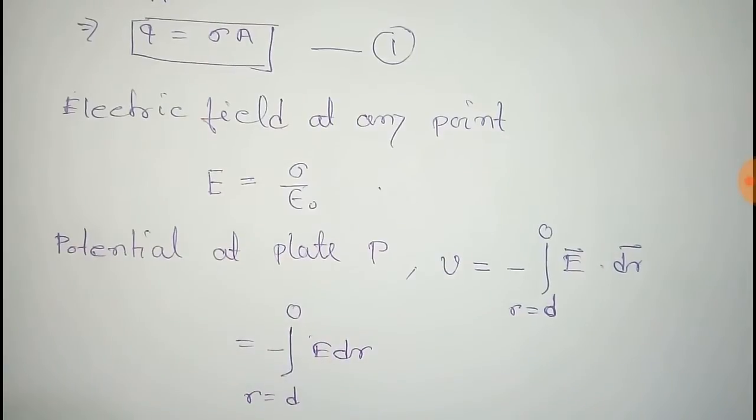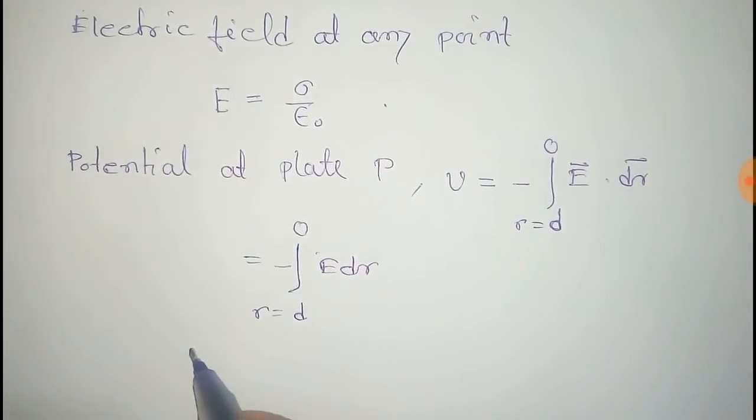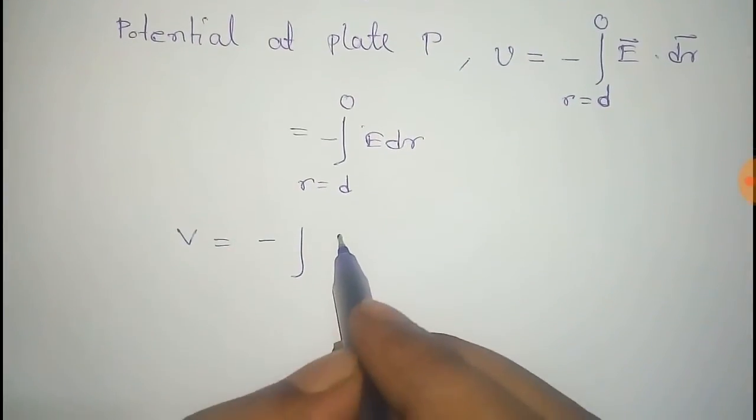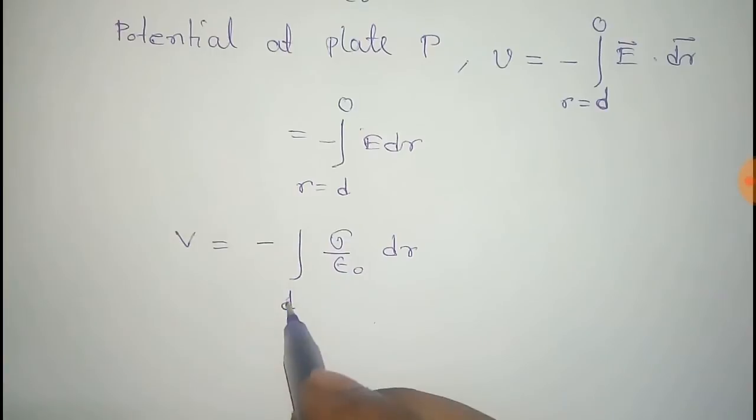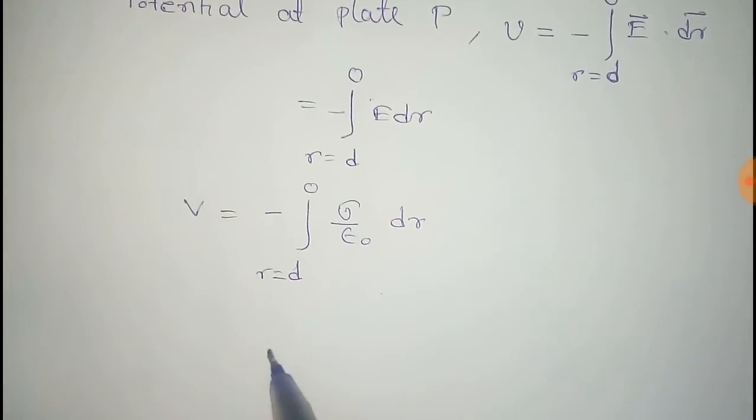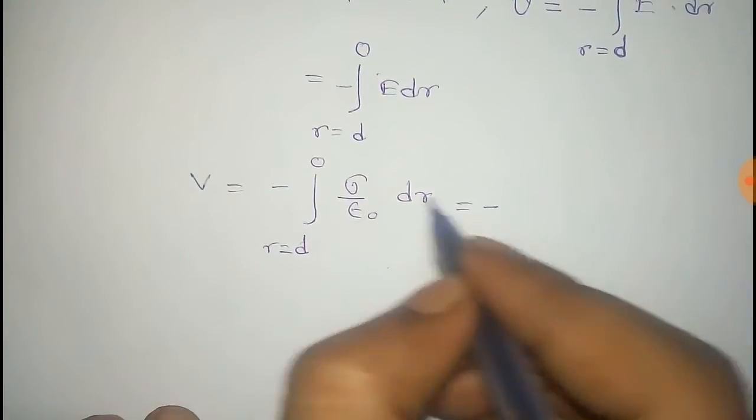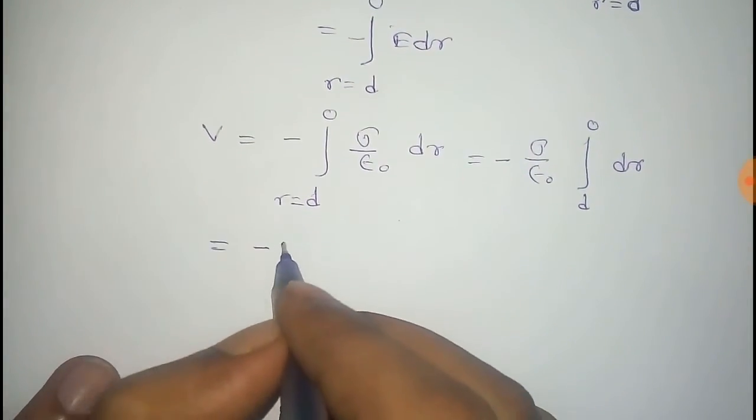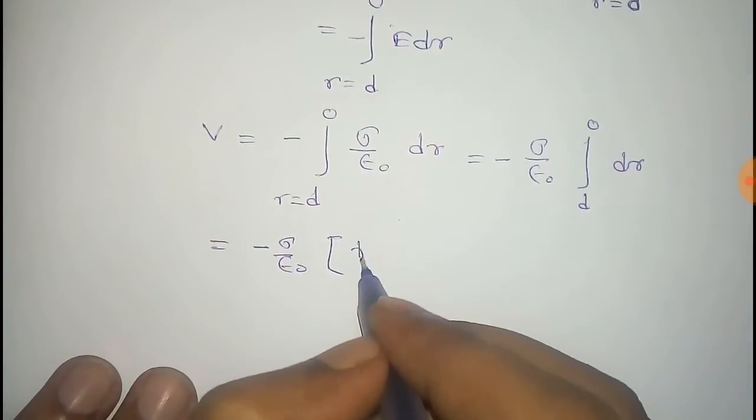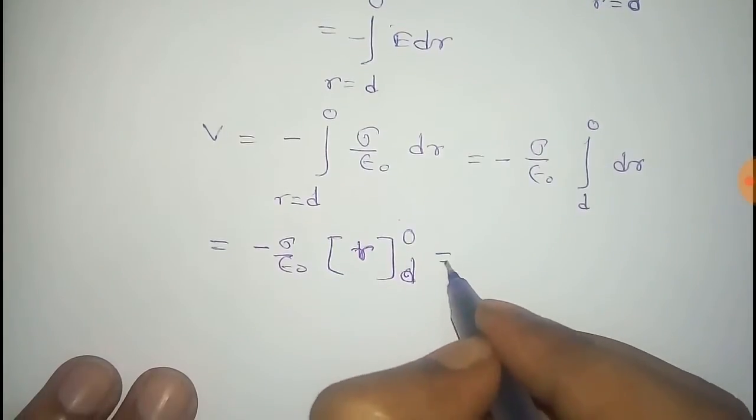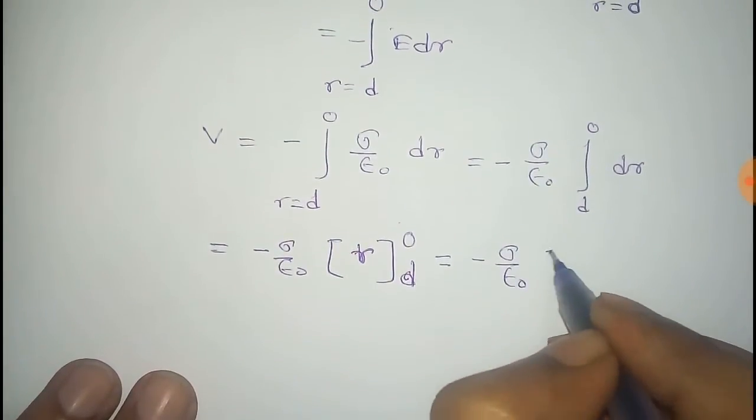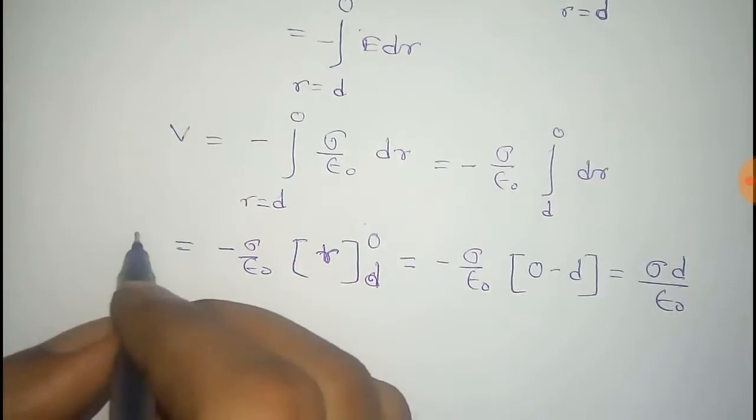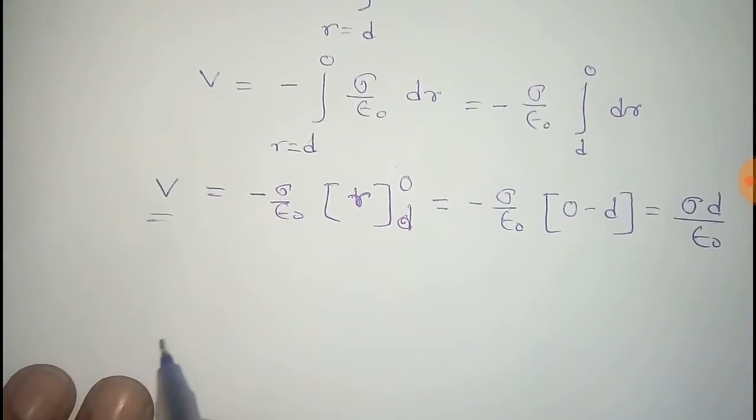Now to integrate it, put the value of E, that is σ by ε₀ into dr. σ is constant, ε₀ is also constant, so the integral part is dr, and if we integrate it, it will be r with the limit d to 0. Now we have to put the limit. So after putting limit, we get the potential at the plate P.